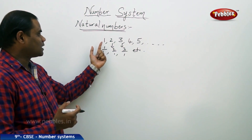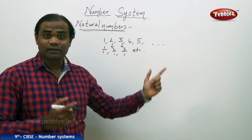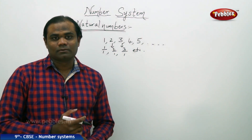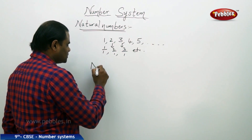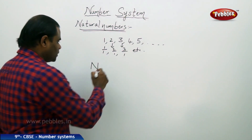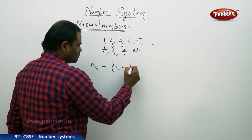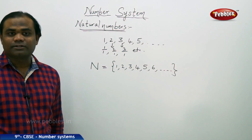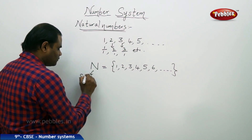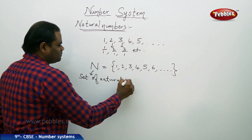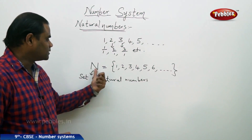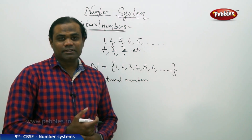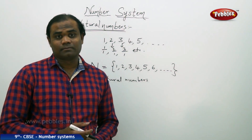Natural numbers are positive and start with 1: 1, 2, 3, 4, 5, 6, 7, 8, and so on until infinity. They are usually denoted by capital N. So capital N = {1, 2, 3, 4, 5, 6, ...} is the set of natural numbers. Denoted by capital letter N is what we call natural numbers in mathematics. Let's look at different examples to understand natural numbers better.